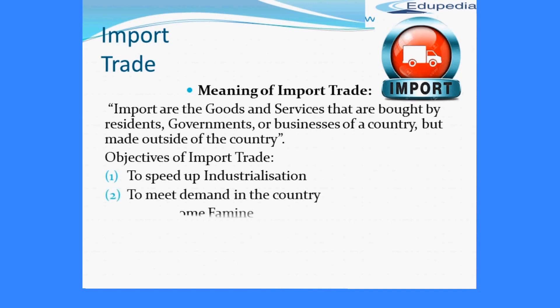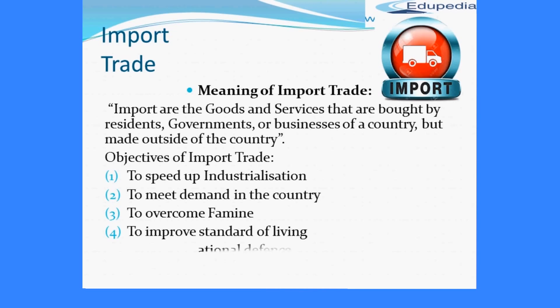The next objective is to overcome famine. During famine, a country imports food grains and essential commodities to prevent starvation. Drought, floods, earthquakes, and other natural calamities might create famine. The next objective is to improve the standard of living — imports enable consumers in the home country to enjoy a wide variety of high-quality products, which enhances their standard of living.